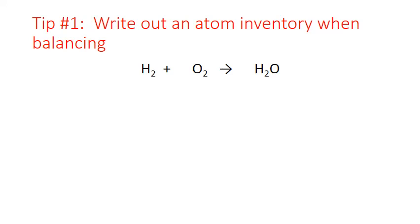My first tip is to always write out an atom inventory when you're balancing. When you look at a particular equation, the first thing you want to note is what elements are actually interacting. In this case, this particular equation only has two element symbols present: hydrogen and oxygen. They're in different forms on either side of the equation, but it's just those two element symbols. You want to make sure you end up with the same number of atoms of each on each side.